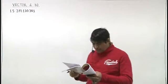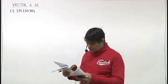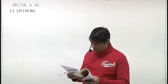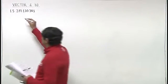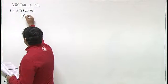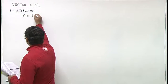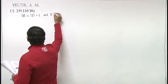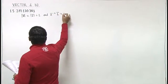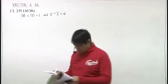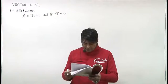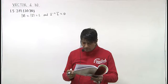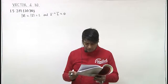In this question, we are given that a and b are two unit vectors and theta is the angle between them — so magnitude of a and magnitude of b are both 1, and the angle is theta. We have two parts to prove: first, sin(theta/2) equals half mod of a minus b; and second, cos(theta/2) equals half mod of a plus b.